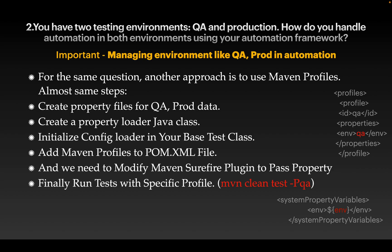The second approach has similar first three steps: create property files for QA and production, create a property loader Java class, and initialize your config loader in your base test class. The fourth step differs: use Maven profiles in pom.xml to declare environments. You can see environment is set to QA on the right side. Additionally, modify the Maven Surefire plugin to pass property values, then run with the hyphen-P profile flag.